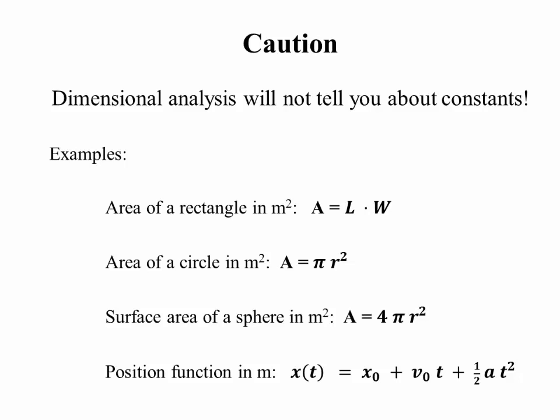And similarly, the equation we use right away for position function, x is in meters. V times t is clearly in meters. A times t squared is in meters. But meters per second times second squared doesn't tell you about that one half. You have to know the equation to get that factor of one half. Dimensional analysis will not tell you that number.